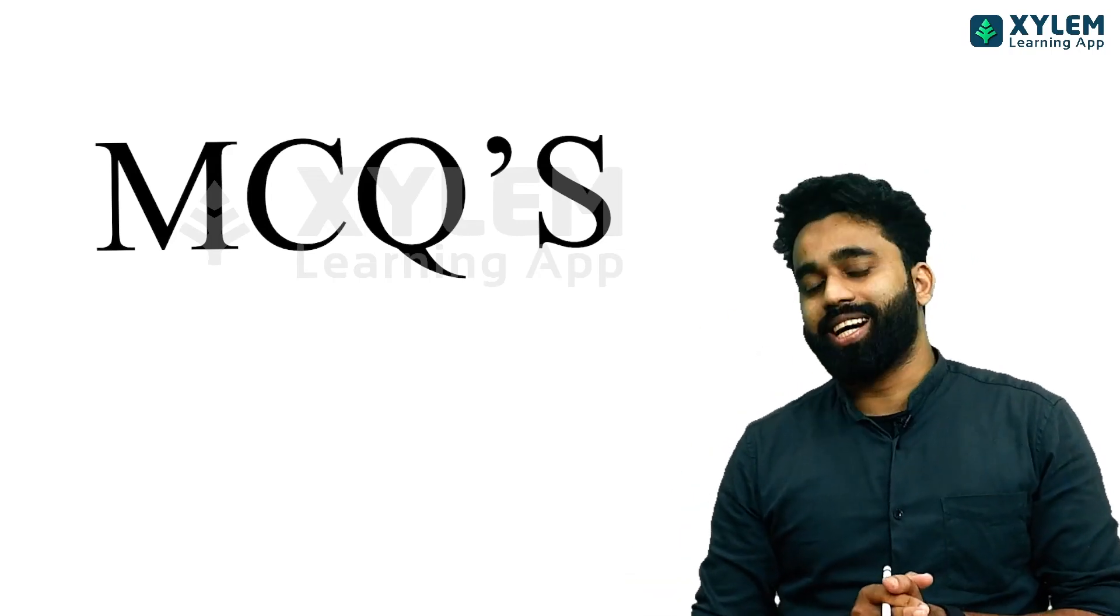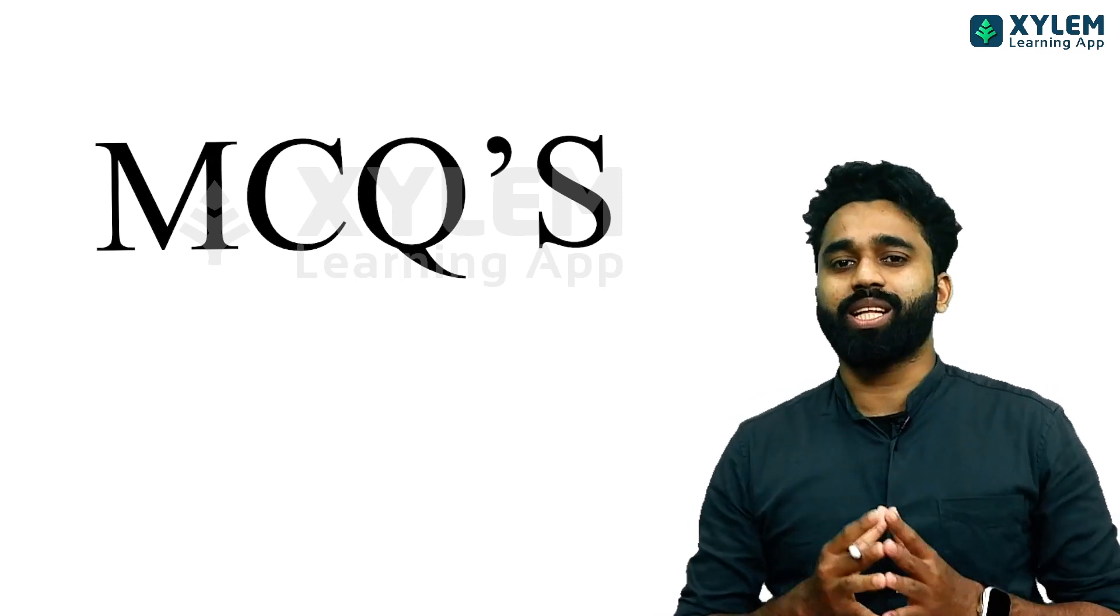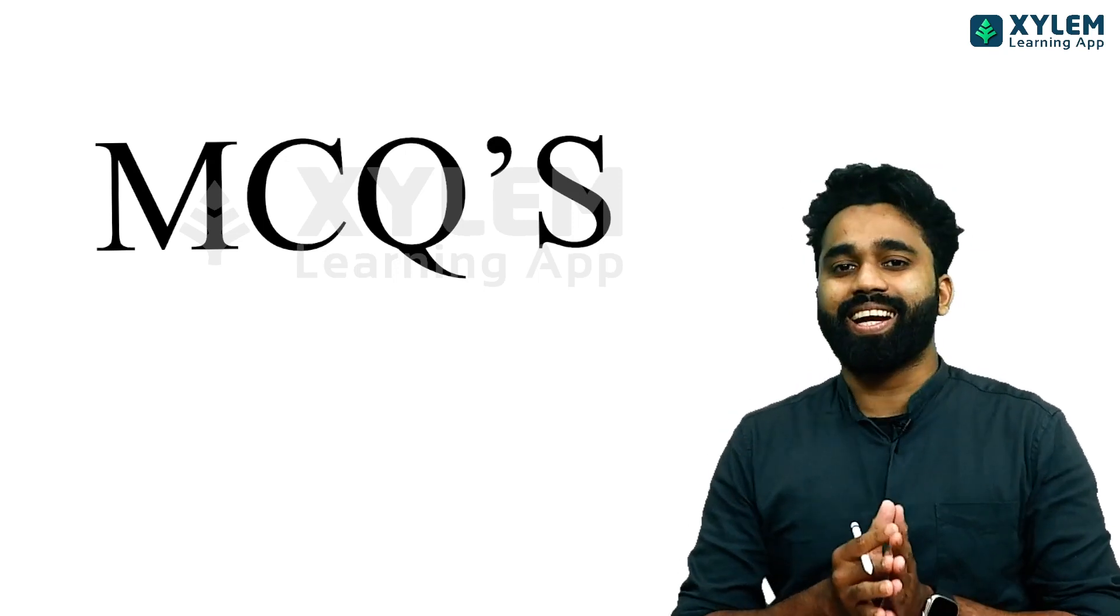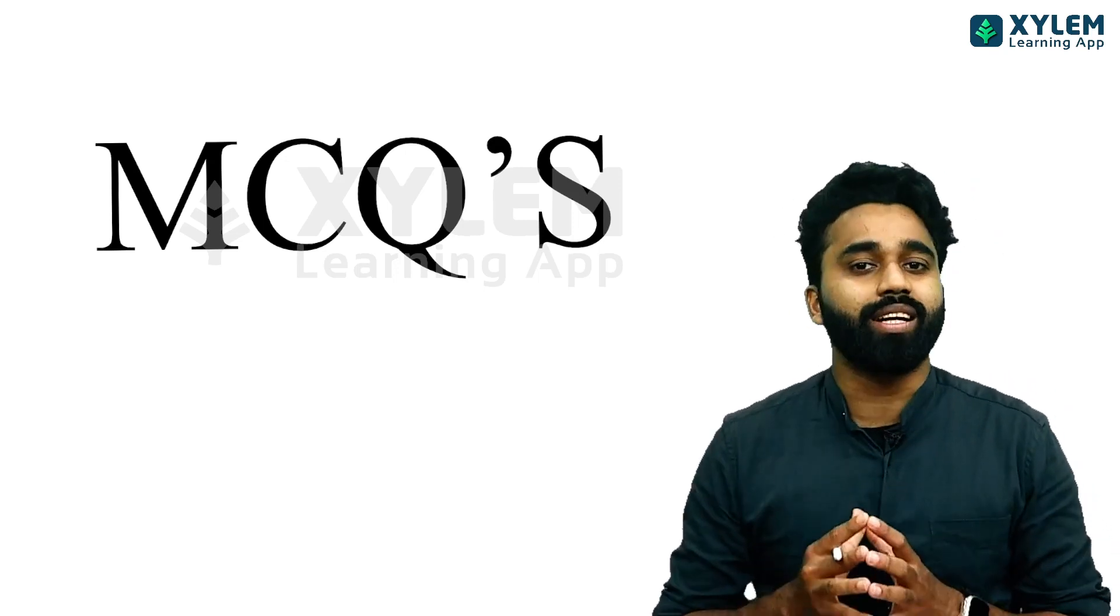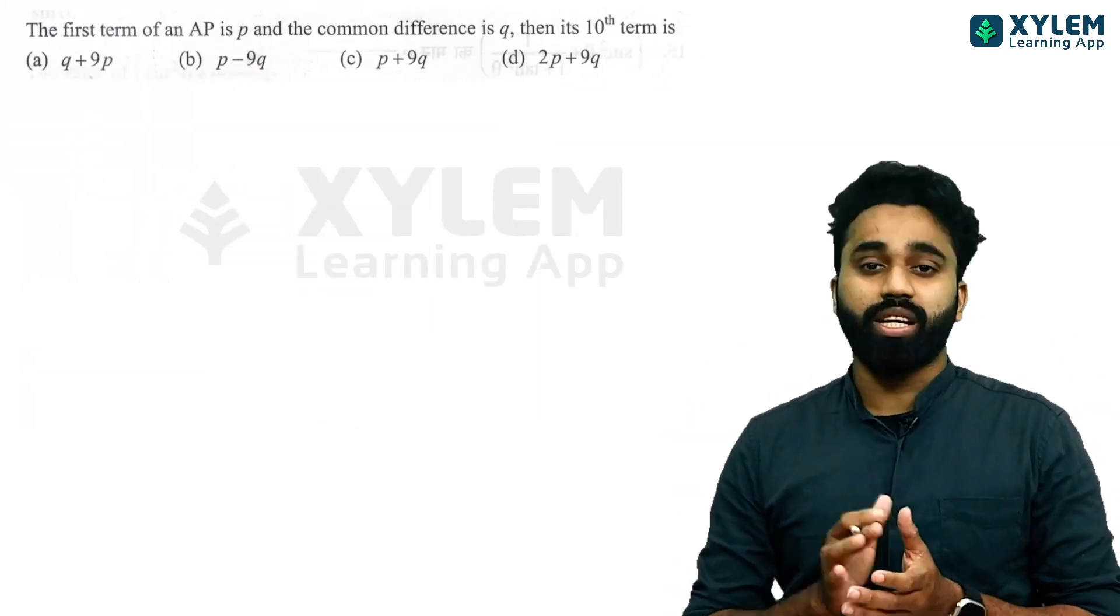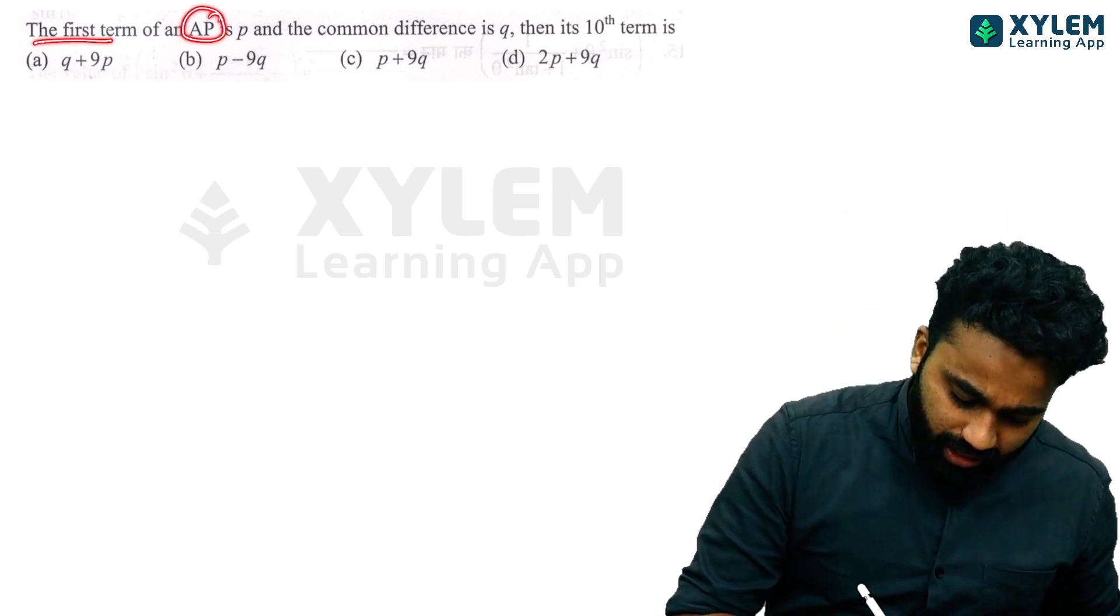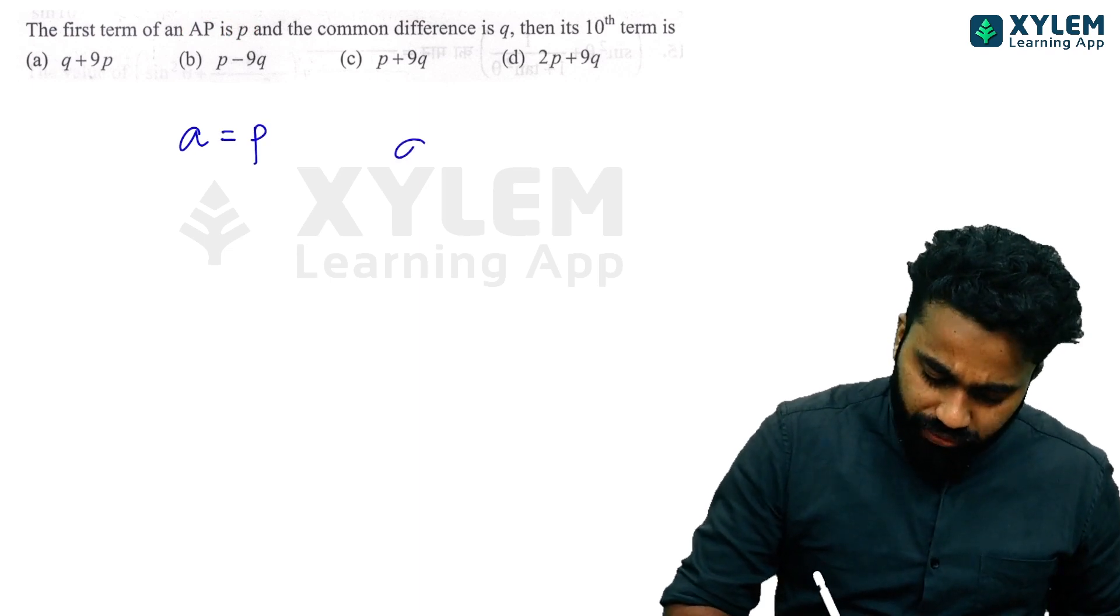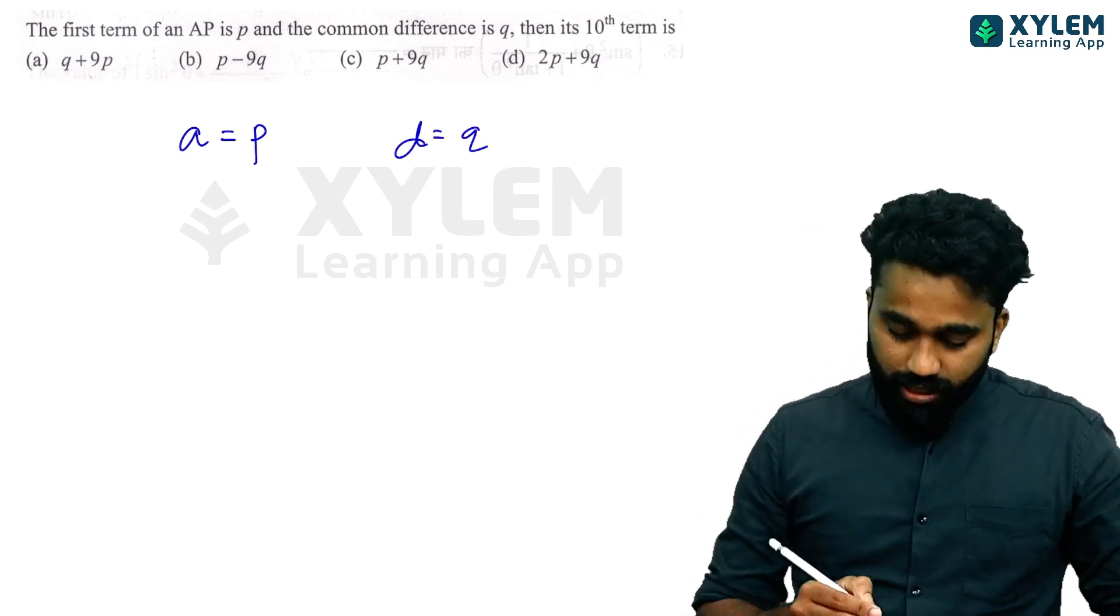Hi guys, welcome back to XYLEM Learning. It's me Shahid Ramazan. Here is the first question for you. Just read the question very carefully. The first term of an AP is p and the common difference is q.